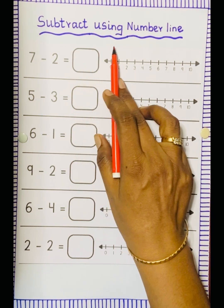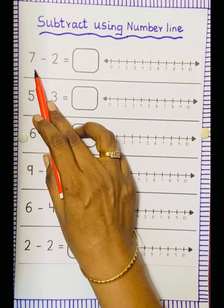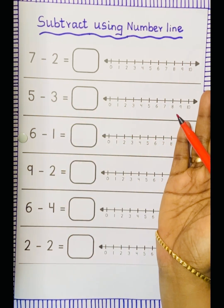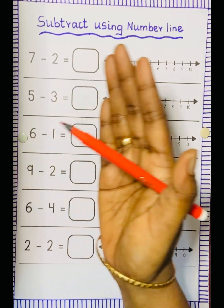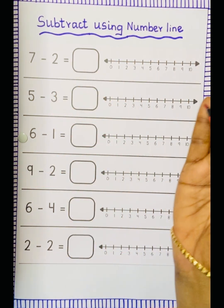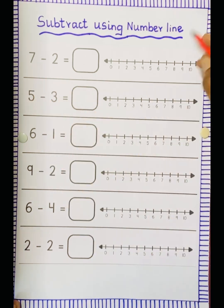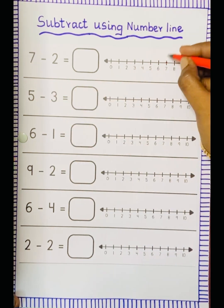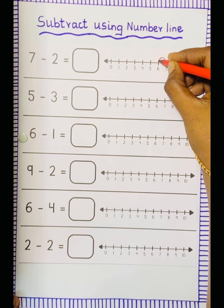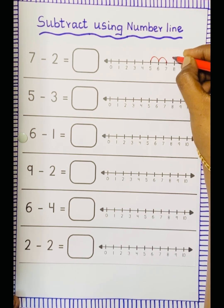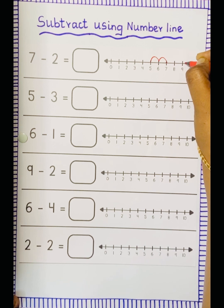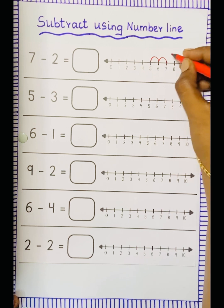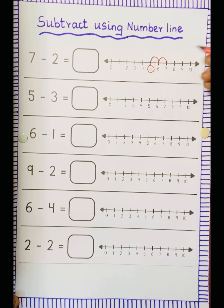Next: subtract using the number line. First question: 7 minus 2. Subtraction means we have to move to the left side — we have to jump to the left side. Keep the dot at the first number, 7. Minus 2 means 2 jumps: 1, 2. So the answer is 5.